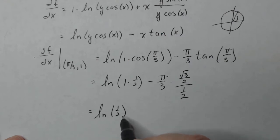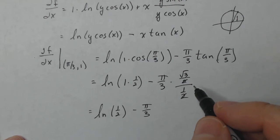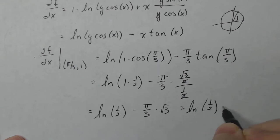So the natural log of one half minus pi over three. And then here I can get rid of the twos. I'm left with square root of three. So natural log of one half minus pi square root of three over three.